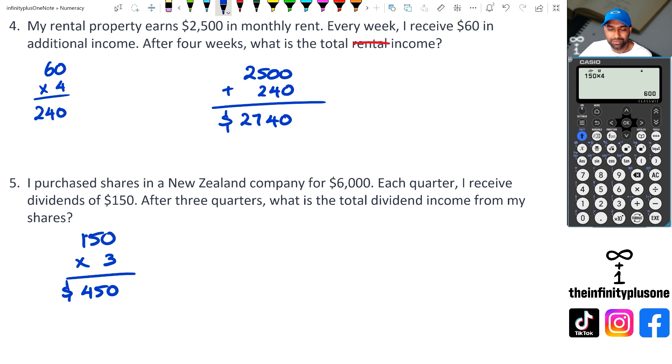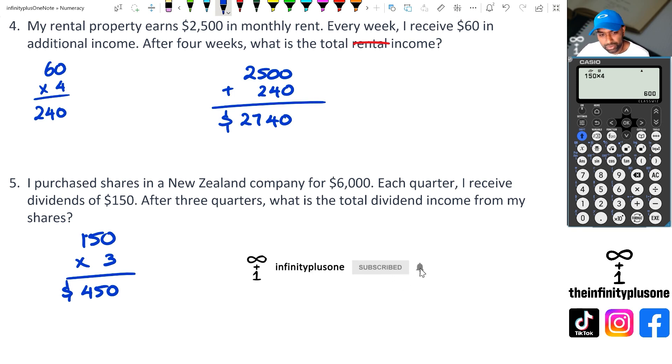Just make sure you read it carefully. Going back to question four — if it asked for total rental income, that would just be $2,500. But if it asks for total income, that's $2,740. That covers a variety of questions you could get asked for multiplying numbers in context. That's it for this video — don't forget to like, share, and subscribe to keep up with the latest content. There should be a couple of playlists popping up here. Great material for revision, and as always, thank you for watching.